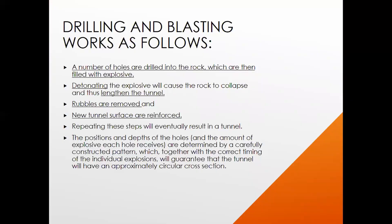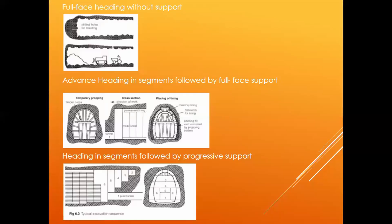Drilling and blasting works as follows: a number of holes are drilled into rock, explosives are placed in them, then detonated so the tunnel length increases. The rubble is removed and the tunnel gets reinforced using one of three methods. The first is full face heading without support — you drill and blast without ever supporting the tunnel because the rock is very stable.